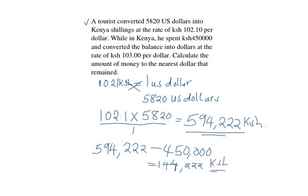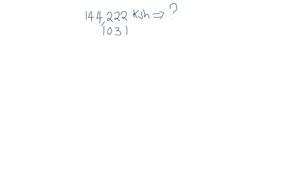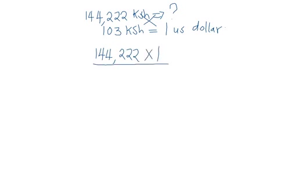We are expected to change this back to US dollars at the rate of 103 Kenyan shillings per dollar. So we have 144,222 Kenyan shillings to convert to US dollars, and the rate is 103 Kenyan shillings for 1 US dollar. Again, we cross multiply: we will have 144,222 multiplied by 1 US dollar divided by 103.